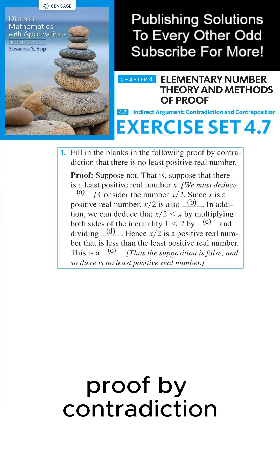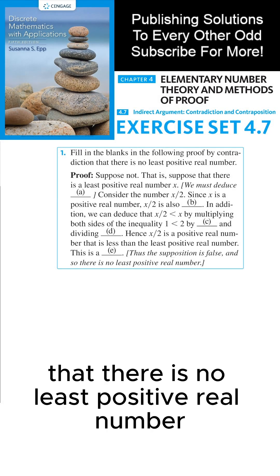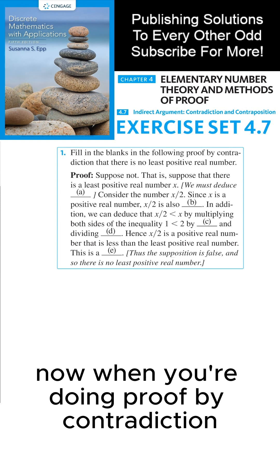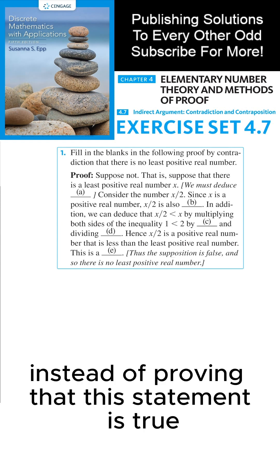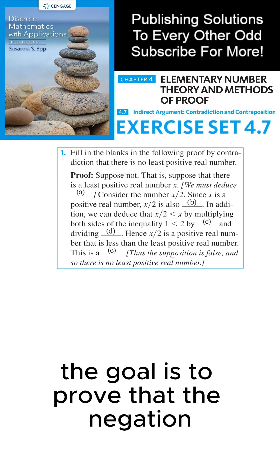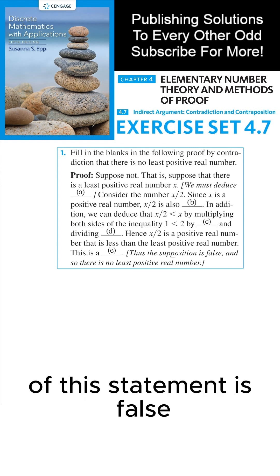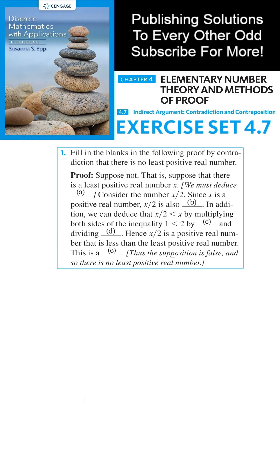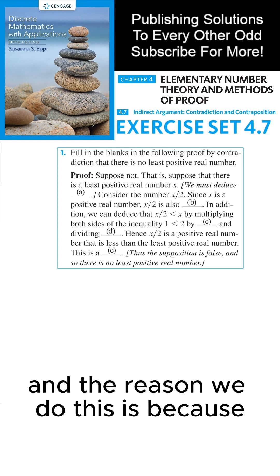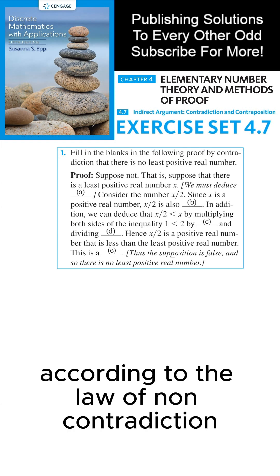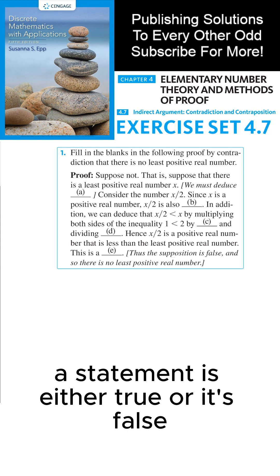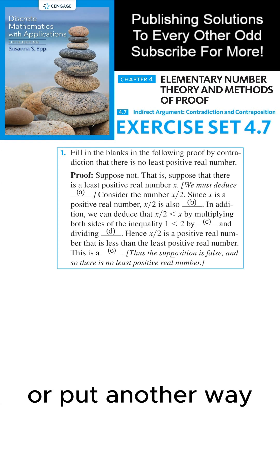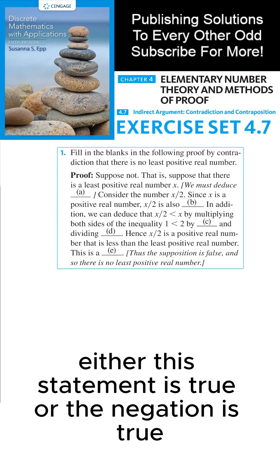Fill in the blanks in the following proof by contradiction that there is no least positive real number. When you're doing proof by contradiction, instead of proving that this statement is true, the goal is to prove that the negation of the statement is false. According to the law of non-contradiction, a statement is either true or it's false — either this statement is true or the negation is true.